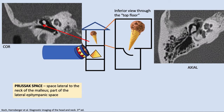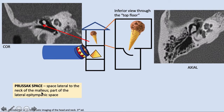Another important space in the epitympanum is the space lateral to the malleus — lateral meaning toward the tympanic membrane. With the tympanic membrane coursing like this, if you have a retraction or unfolding of that portion of the tympanic membrane, you can have formation of a cholesteatoma in that portion, lateral to the neck of the malleus. This space is called the Prussak space, which is part of the lateral epitympanic space.